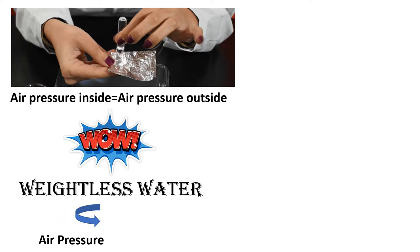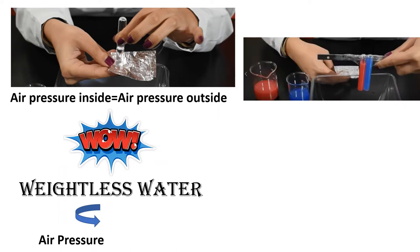When some of the water escapes, this causes the volume of air to increase slightly. The pressure of the air outside the tube is now greater than the pressure inside the tube. But how does the water stay in the tube when the foil is removed? The answer is surface tension.